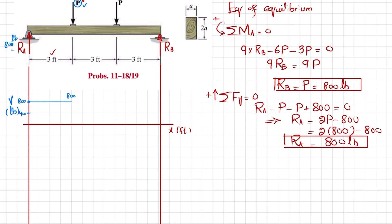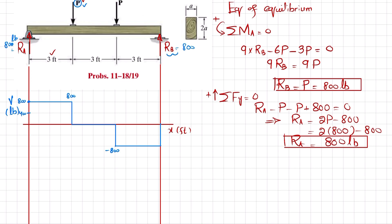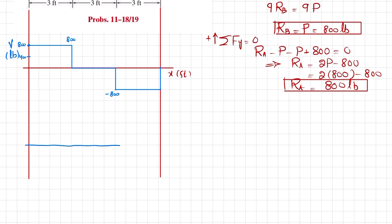At the first load point we have a downward load P of minus 800, so 800 minus 800 brings the shear to zero. From that point to the next load, no other force acts so shear remains at zero. At the next load point, another downward P of minus 800 drops the shear to minus 800. It remains at minus 800 until the end, where Rb of plus 800 brings the shear back to zero, completing the shear force diagram.